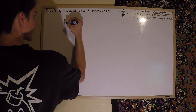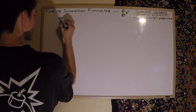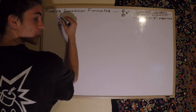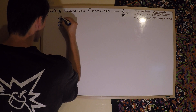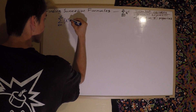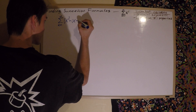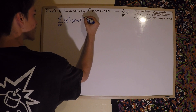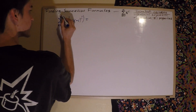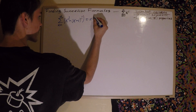The first thing you're going to have to know is that the sum from k equals 1 to n of k raised to the i-th power minus k minus 1 raised to the i-th power is actually going to equal n raised to the i-th power.